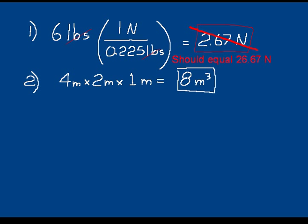In problem 2, calculate the volume of a rectangular block of concrete given its length, width, and height. The order of multiplication doesn't matter — length times width times height in any order. I gave you a height of 100 centimeters, so convert that to 1 meter so all units match. Then 4 times 2 times 1 equals 8 cubic meters.